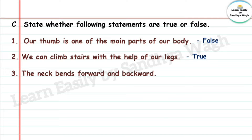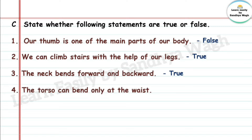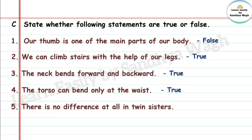Question 3: The neck bends forward and backward. Answer: True. Question 4: The torso can bend only at the waist. Answer: True. Question 5: There is no difference at all in twin sisters. Answer: False.